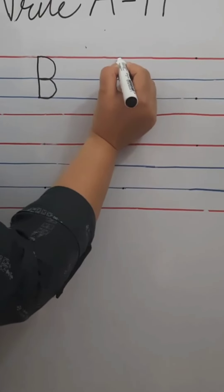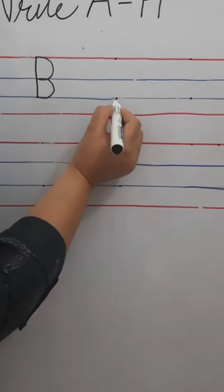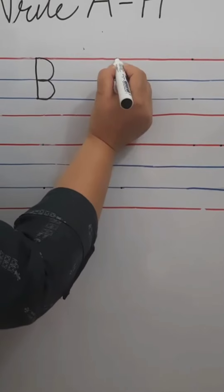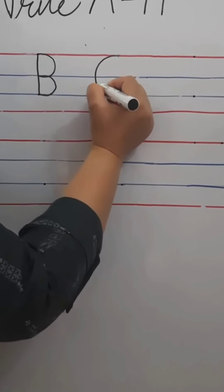For C, start from here, from red line to second blue line. And make a curve. So, it is the formation of letter C.